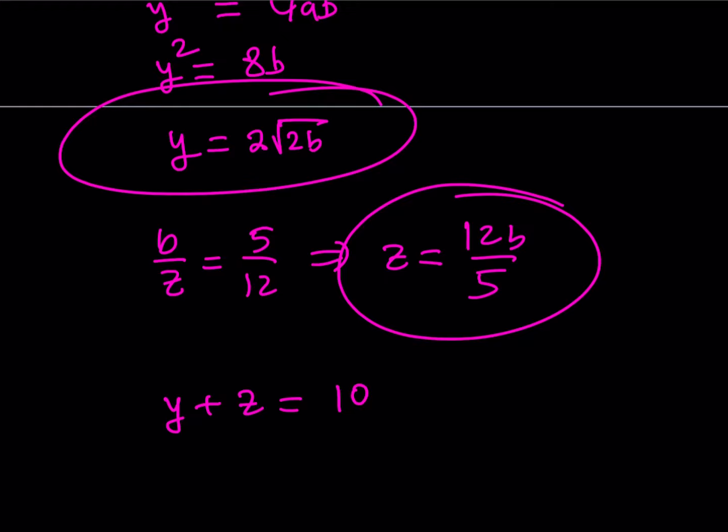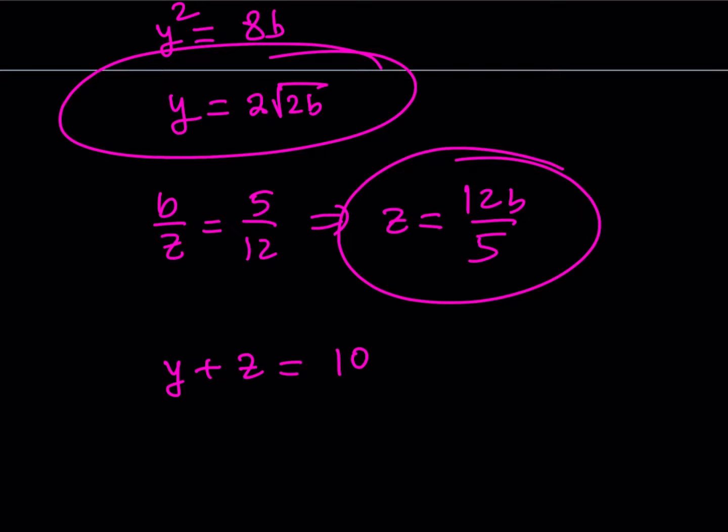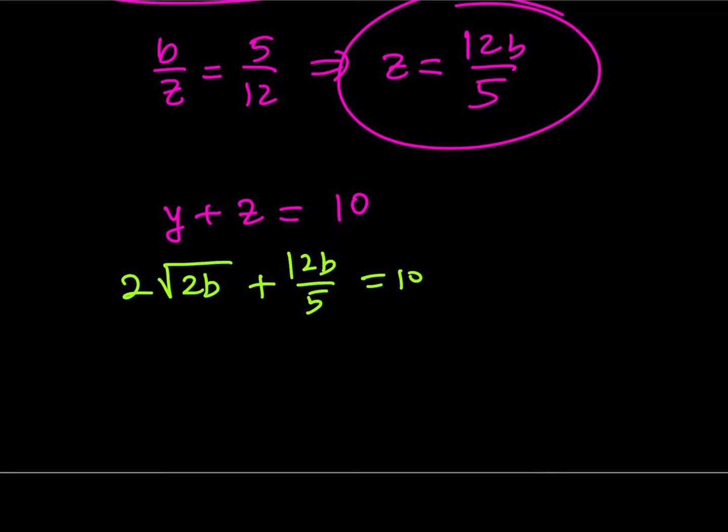y plus z is equal to 10. Now, we're going to go ahead and substitute these values here. y can be written as 2 times the square root of 2b plus z, which is 12b over 5, and the sum is equal to 10.